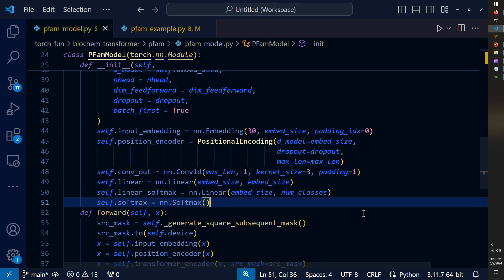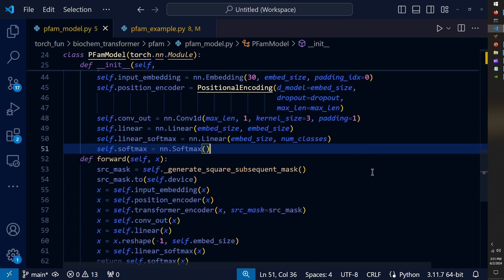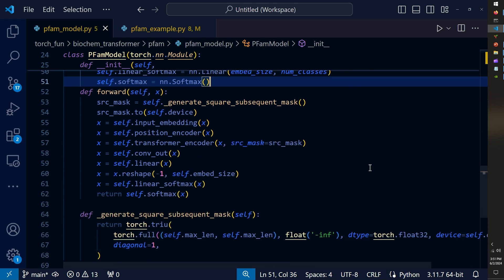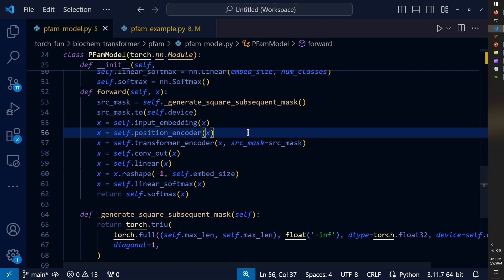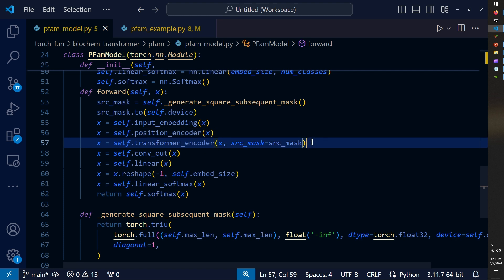A forward pass of this model is relatively simple since all the heavy lifting is handled by the PyTorch classes. To just show off the forward pass very quickly, I am also copying in this masking function directly from PyTorch using their own implementation. I generate that at the beginning of the forward pass. Then I apply all of our layers in sequence, the first being the input embedding, then our positional encoding. Then we pass that to the transformer component, and then we apply our regression layers and finally softmax activation.